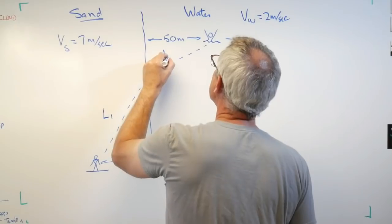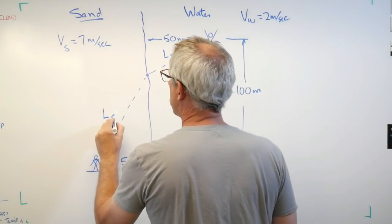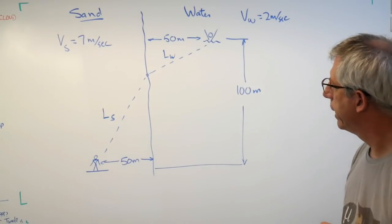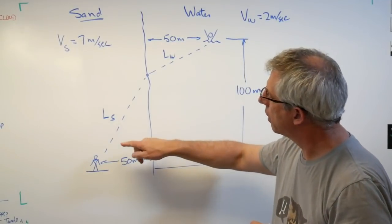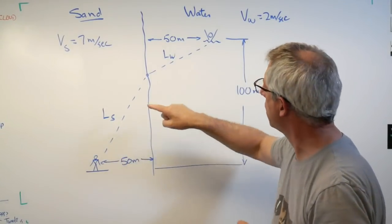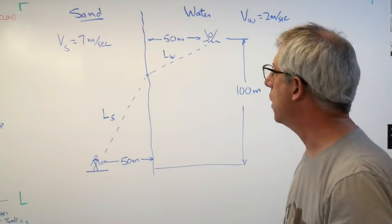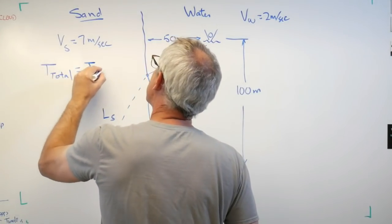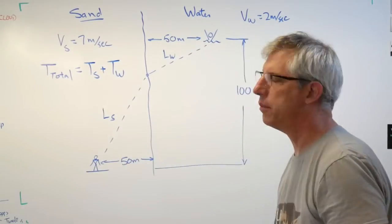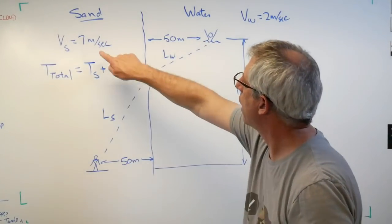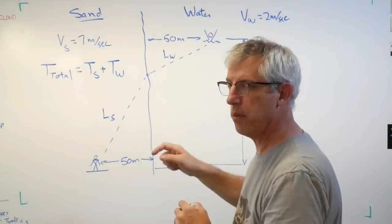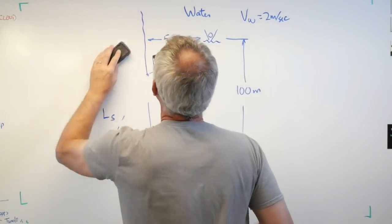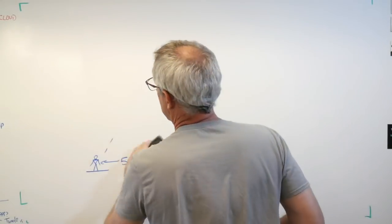We're going to look for two lengths: L_sand and L_water, with subscripts to match. If I want to find the time to get from the starting point to the swimmer, the total time equals the time across the sand plus the time across the water. We've got distances and rates of speed, so we should be able to figure out time. Let's go back to junior high school.